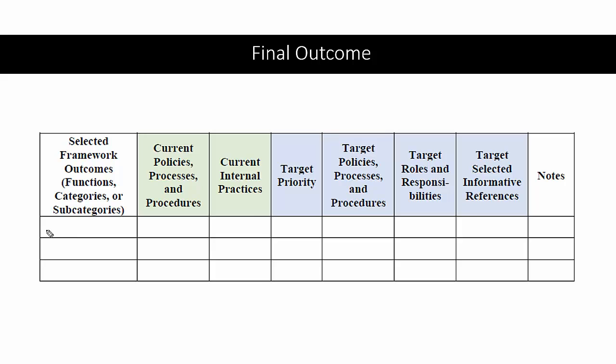Finally, we repeat the process — because cybersecurity is a continuous process, we regularly revisit the steps to ensure the organization's cybersecurity posture remains robust and relevant. For example, the healthcare organization schedules an annual review of the NIST CSF process to stay proactive. The profile template documents the function, current policy in place, internal practices, target priority, responsible party, applicable standard, and notes. The organization's objective is to protect patient health records and comply with healthcare regulations — covering governance strategy, asset management, access control, incident detection, response, and recovery.